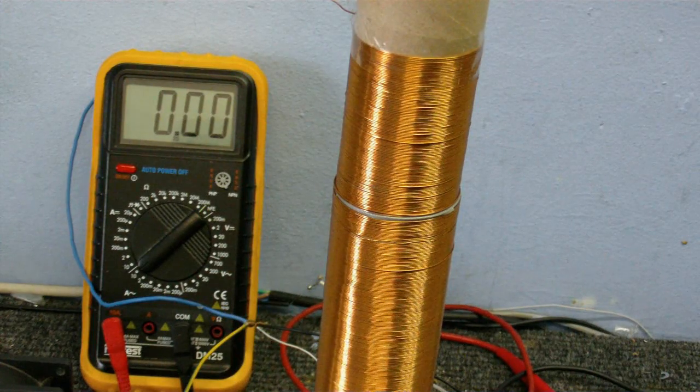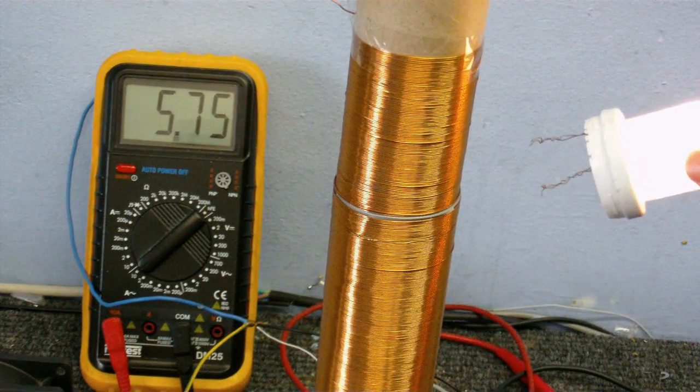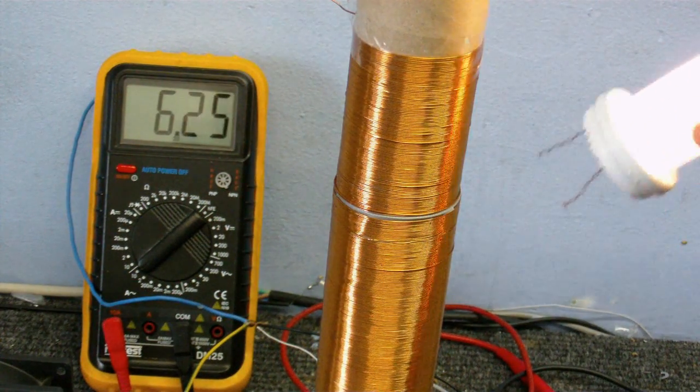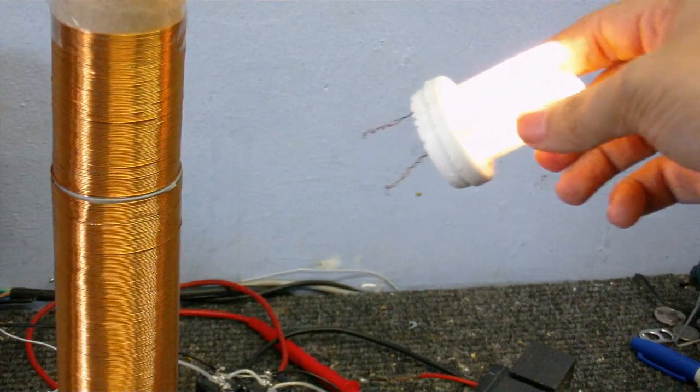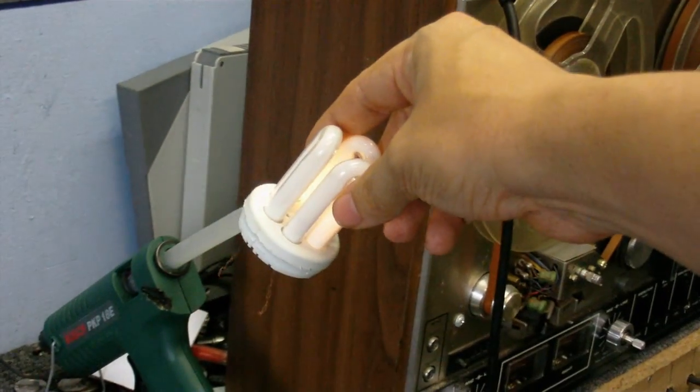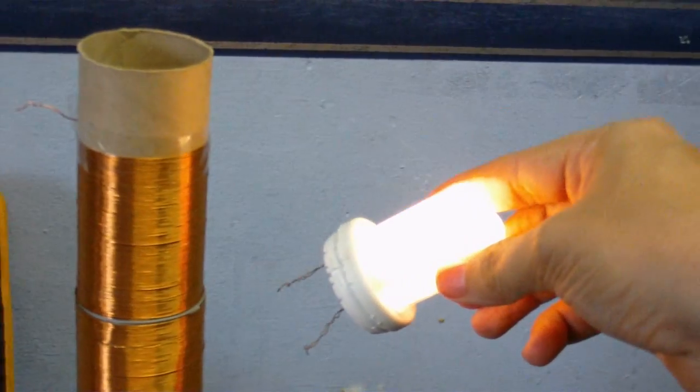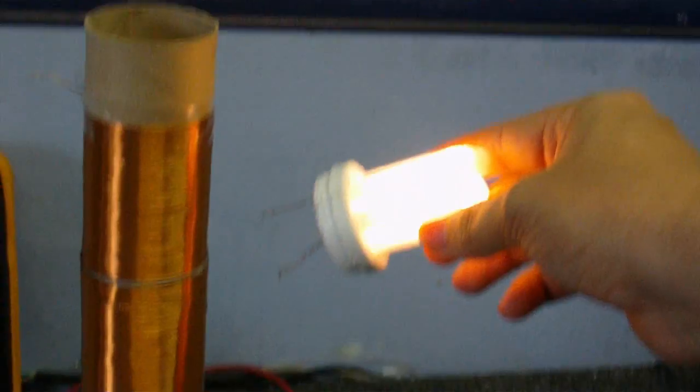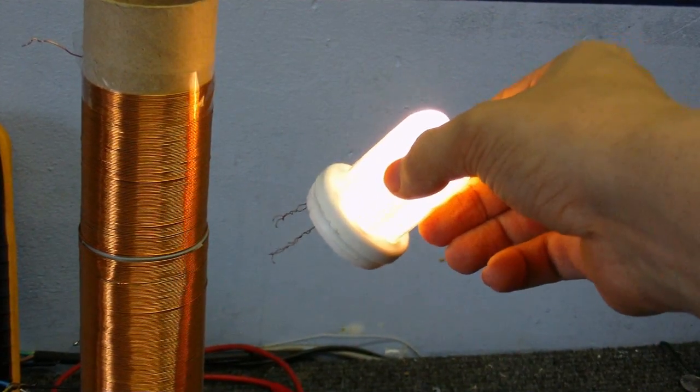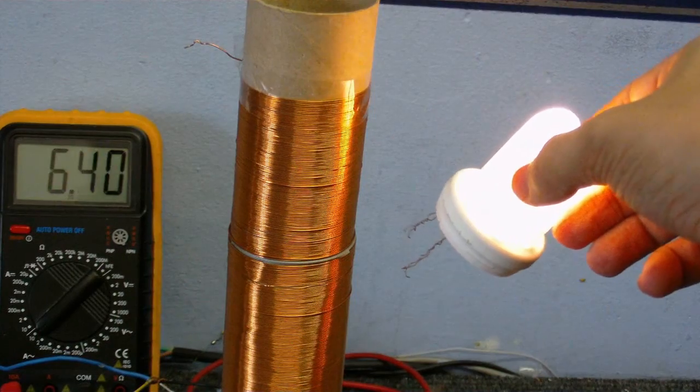You can also do a wireless energy transmission with this. So I bring this CFL end near the tube. As you can see it lights up. As I pull it away, it's still lighting. There's still a little bit of light and it's miles away from the tube now. As you can see as I bring it closer, it lights nice and bright. It's not even touching it. There's only one word to explain this, and that is magic.